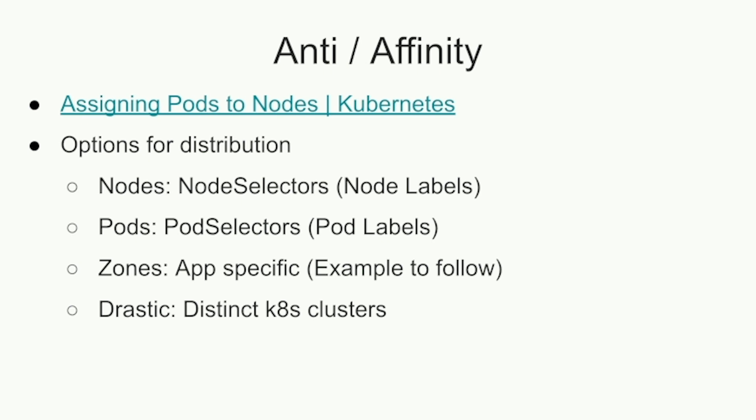For affinity and anti-affinity, you have many distribution options. You can put processes on different nodes, in different zones, or even across different Kubernetes clusters. The FoundationDB operator supports a layout where it runs an operator instance on each Kubernetes cluster, with a meta-operator on one of them coordinating the individual operators — allowing a FoundationDB cluster spanning across three Kubernetes clusters.